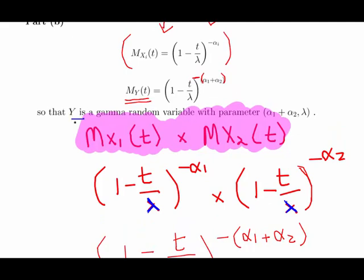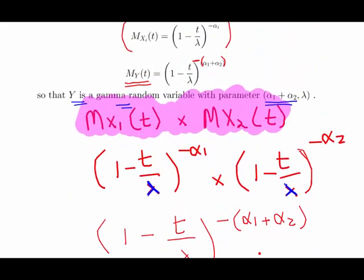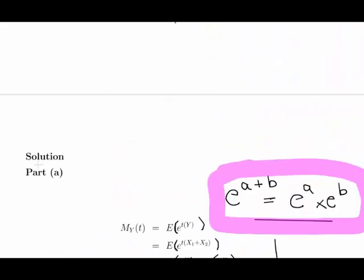Y is a gamma random variable with parameters alpha 1 plus alpha 2 added together as a single shape parameter, and lambda as our rate parameter. That's straightforward enough. Moment generating functions of gamma random variables, it's not particularly hard really. It's having a solid understanding of the basics really helps. We'll leave it there.